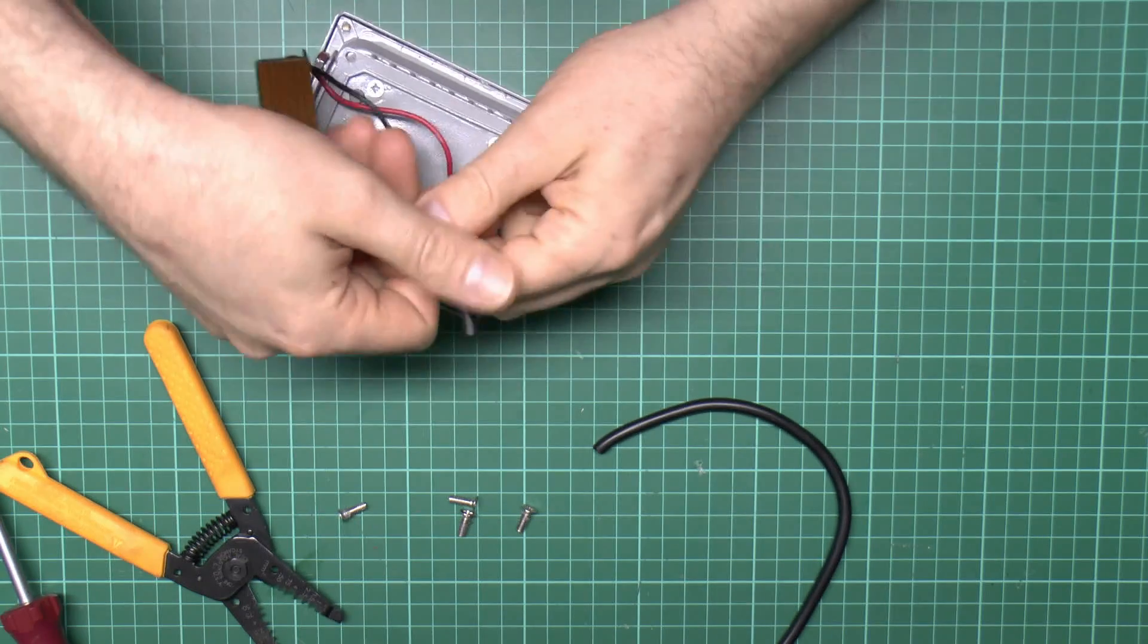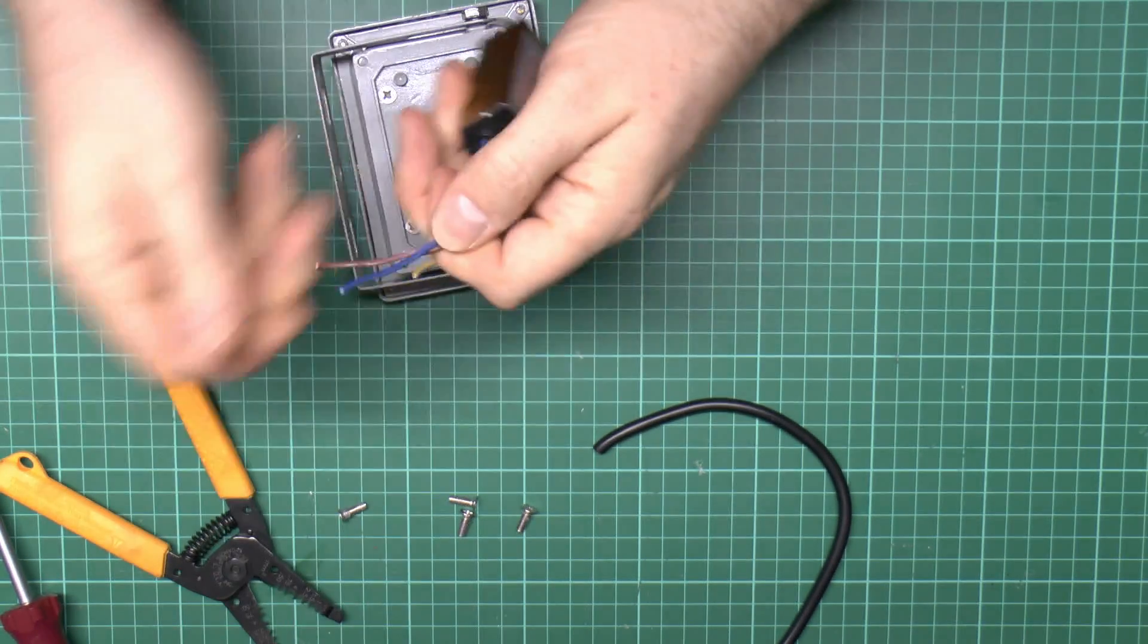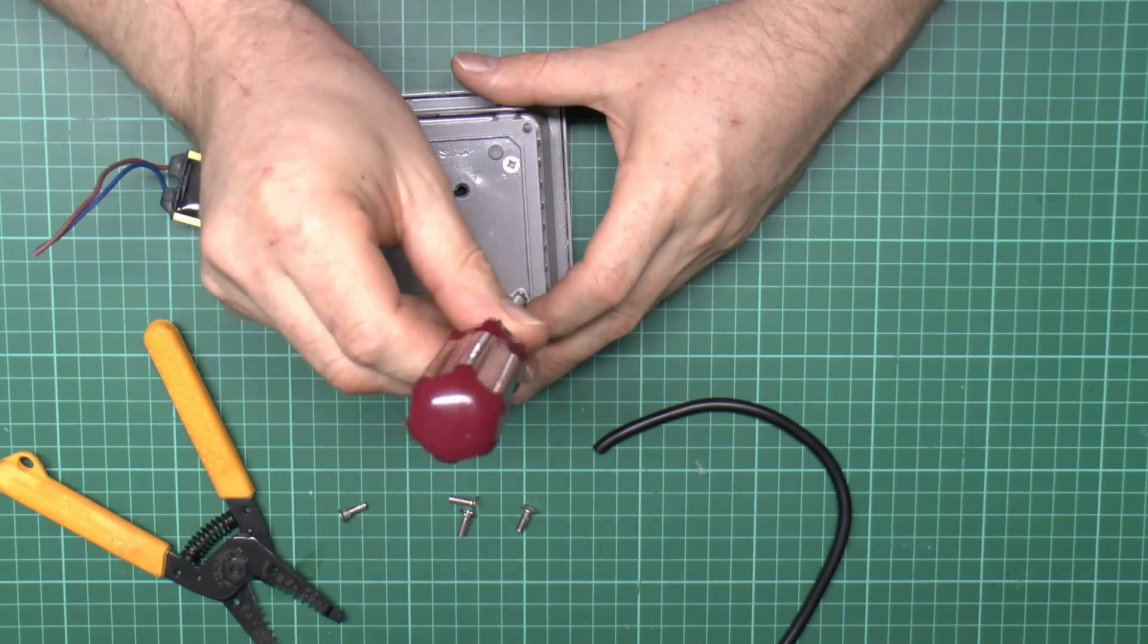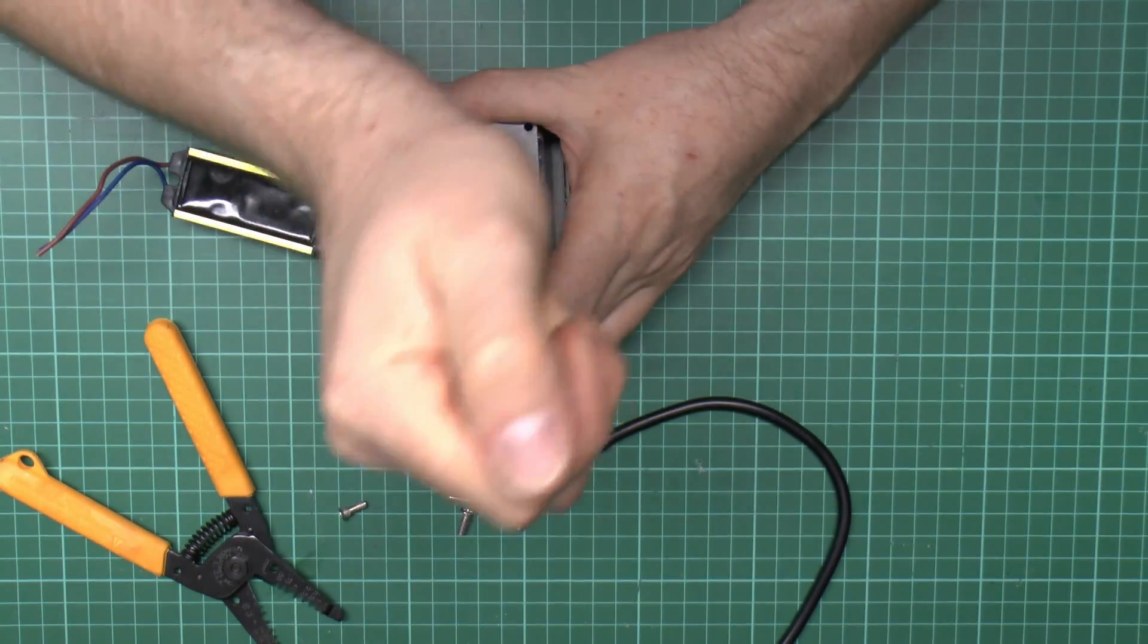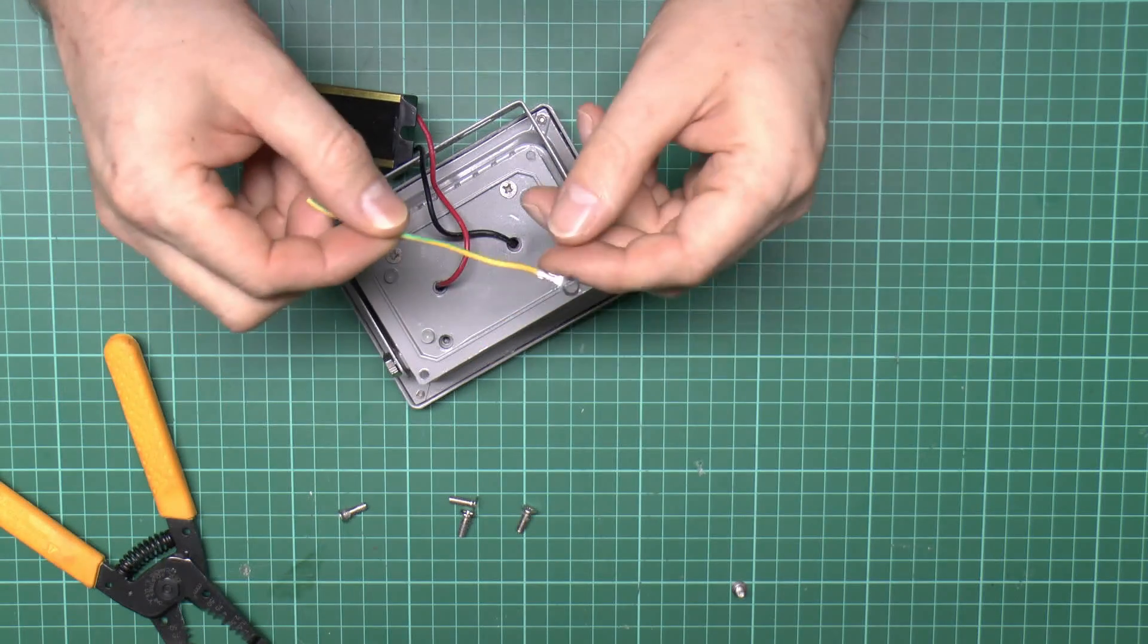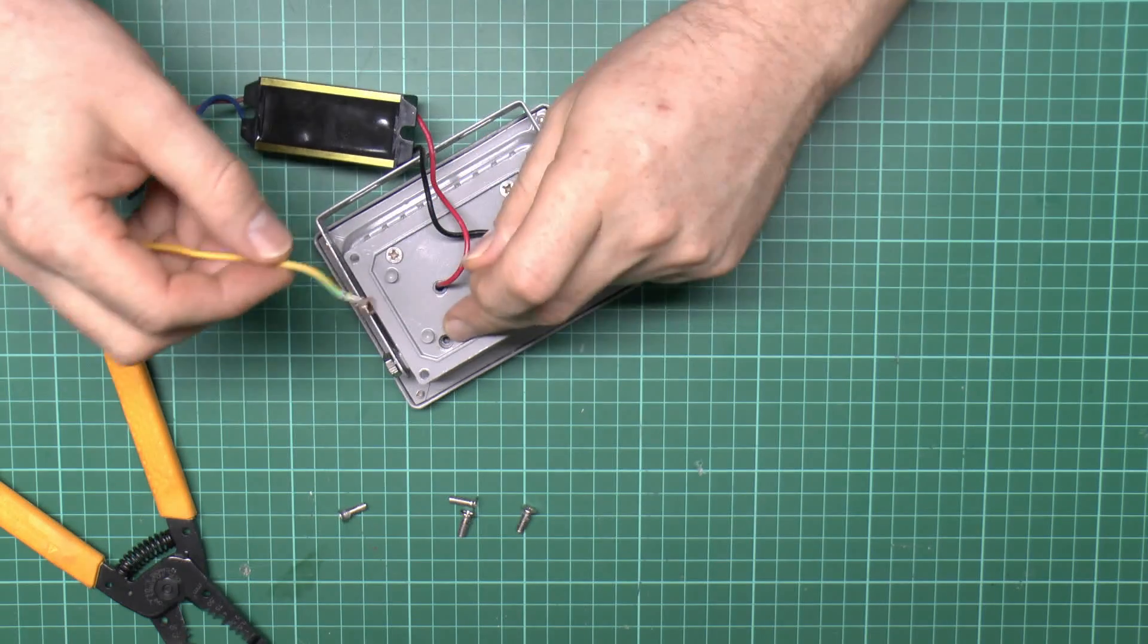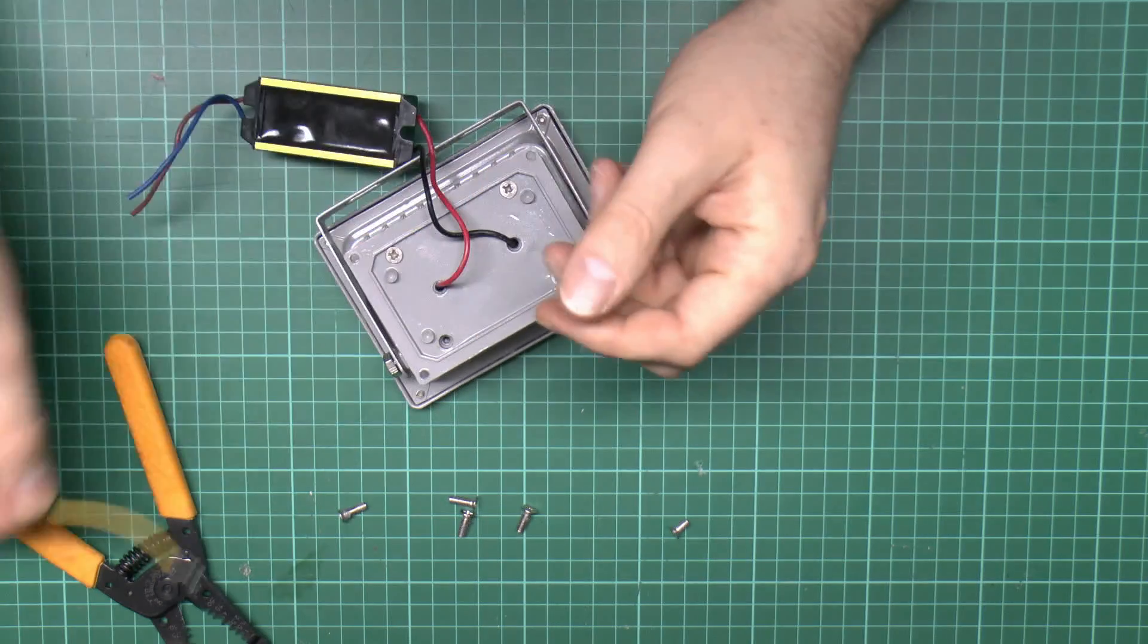We'll pull this outer sleeving away there. For the earth wire we can undo this tab here. We can simply attach a new piece completely and then just fix it back under the screw there. There's no point trying to join this because we can just put a new lug on the end.